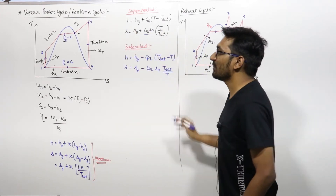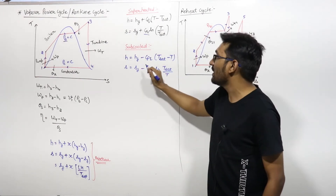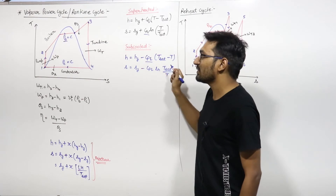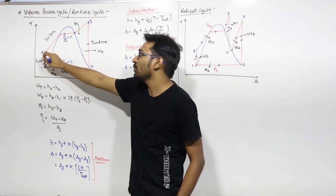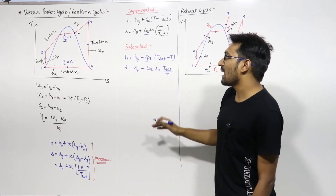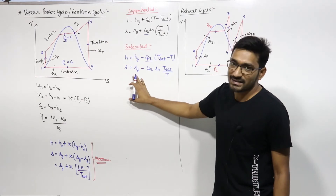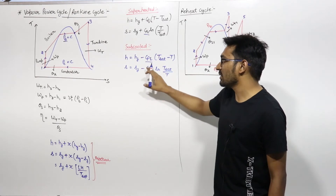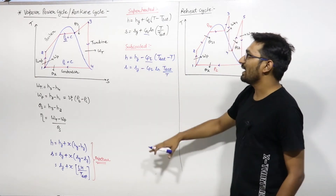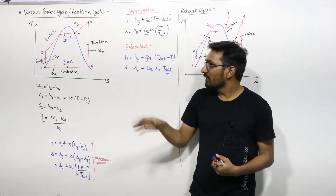If you need to find properties in the subcooled region and those are not directly given, then enthalpy at any point in the subcooled region equals HF corresponding to that saturation temperature minus CPL into (T-saturation minus temperature of that point). So H2 = HF minus CPL into (T-saturation minus T2). For entropy in the subcooled region: entropy at that point equals SF minus CPL times ln(T-saturation / T). Knowing these formulas, you can easily find enthalpy and entropy in any region.